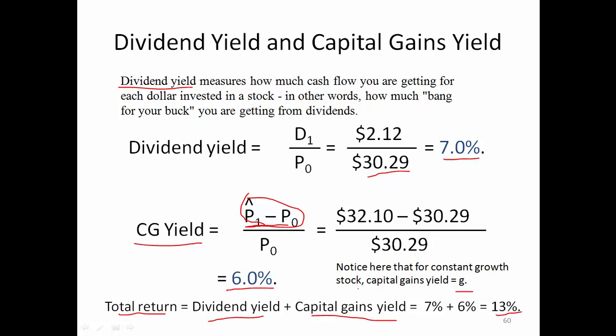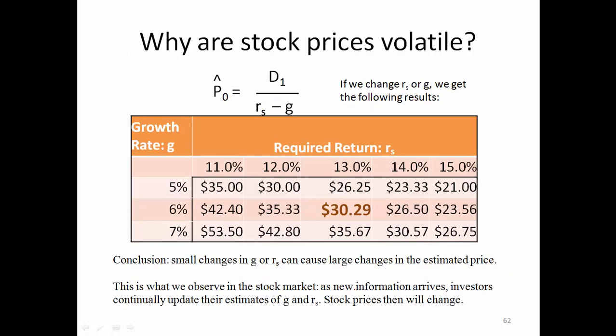Stock prices are volatile because any small change in the assumed growth rate G or required rate of return Rs can cause large changes in the estimated price. As new information arrives, investors continually update their estimates of growth rate and required rate of return, and stock prices change accordingly.